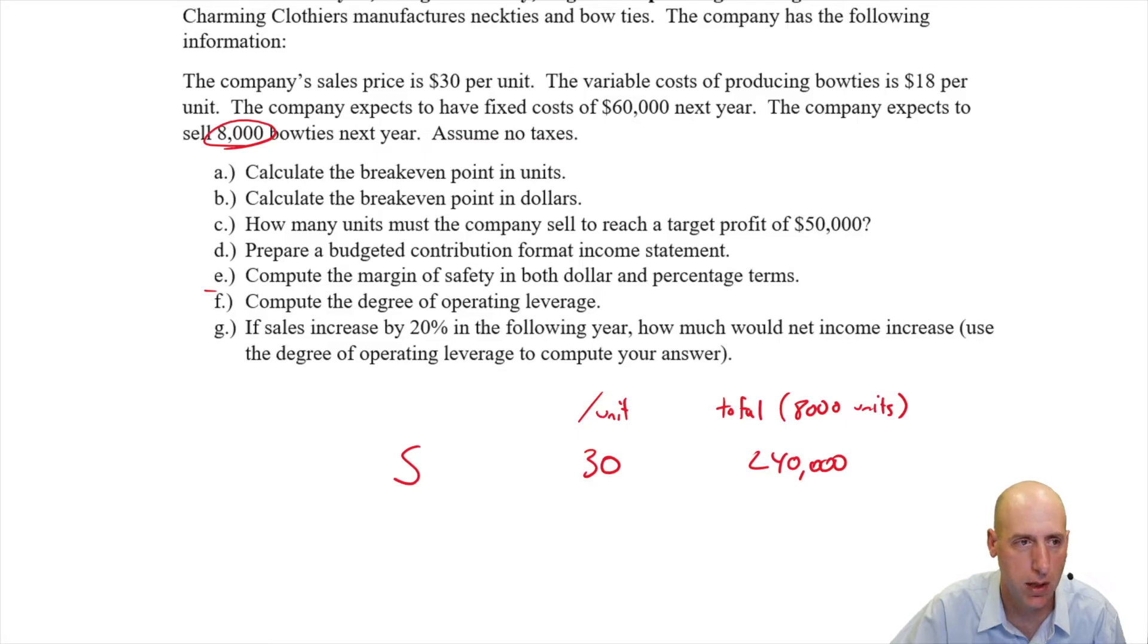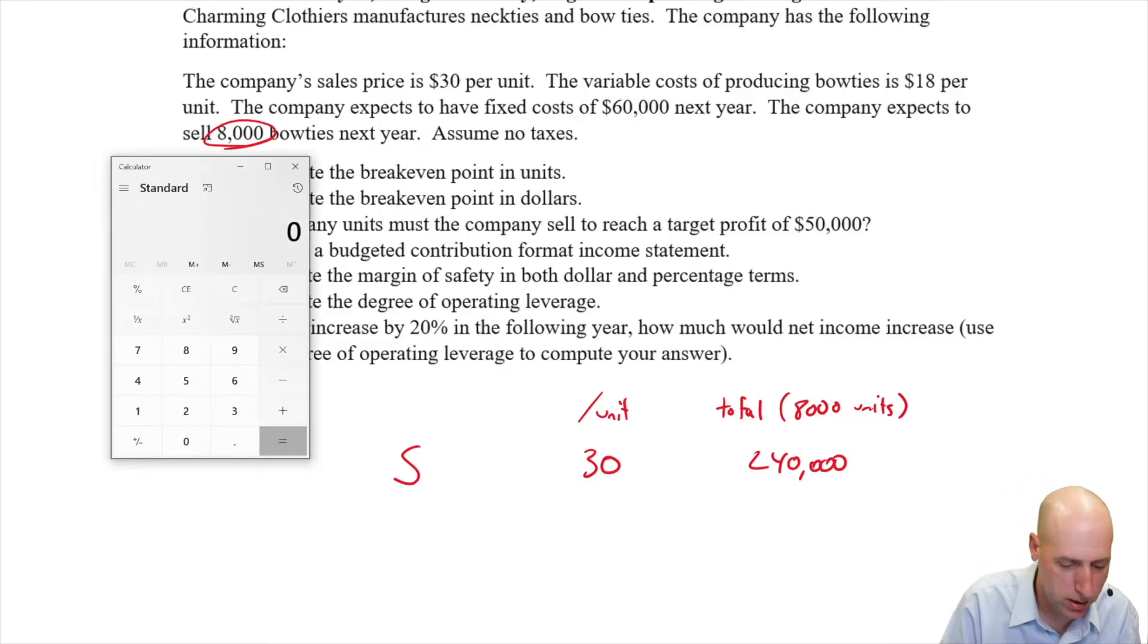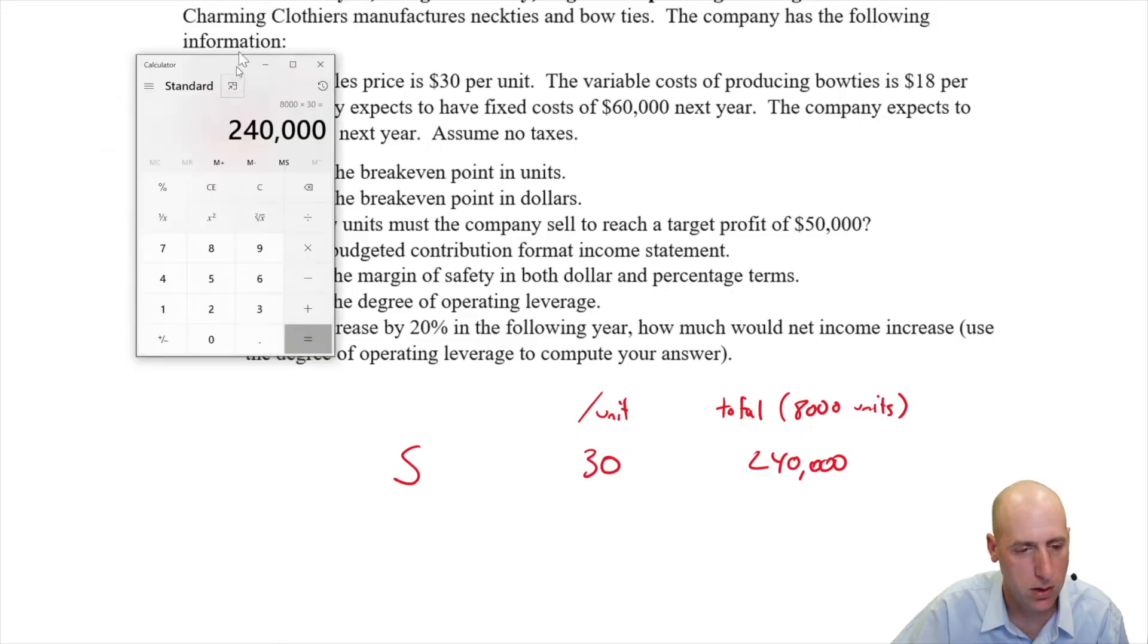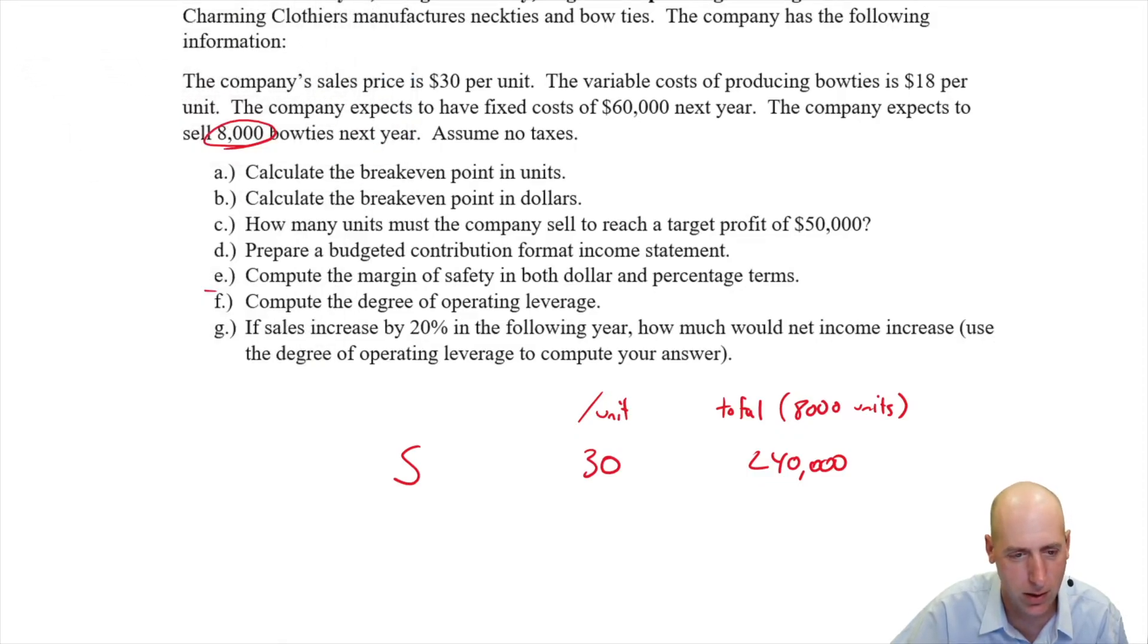I think that's $240,000. Let me just bring down my calculator and confirm that to be true. 8,000 bow ties at $30 a bow tie. Yes, $240,000. I was correct. Good. Hate to get that wrong on the first calculation. Okay, let's move on.